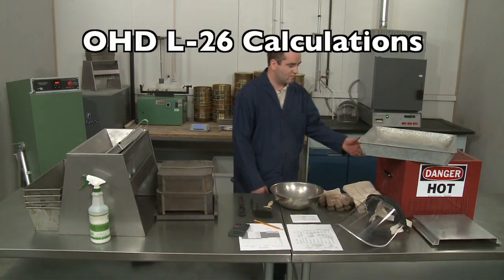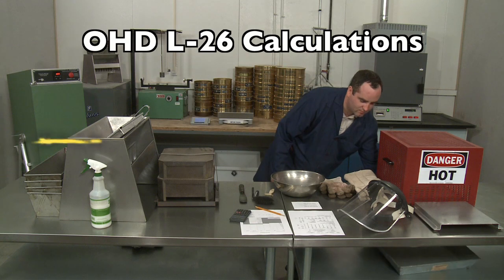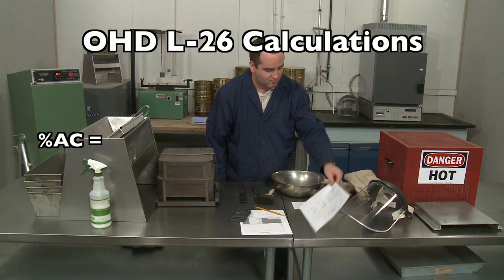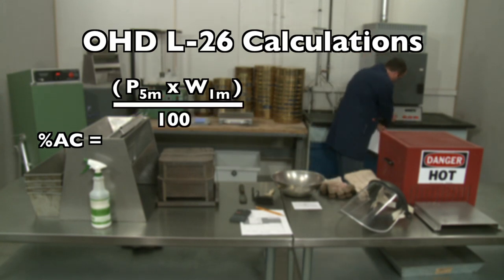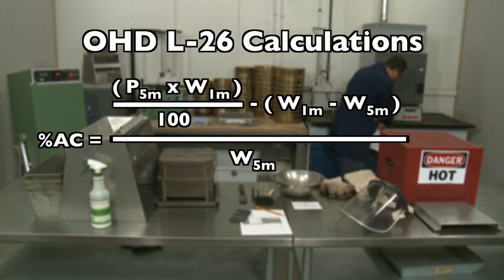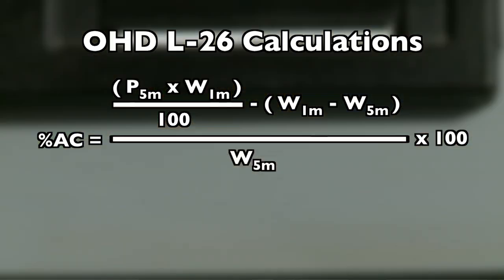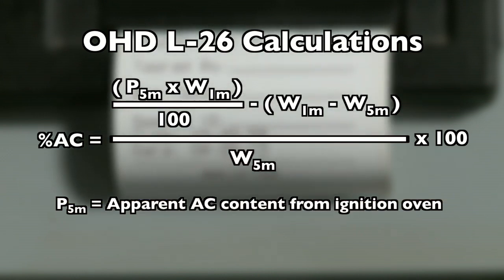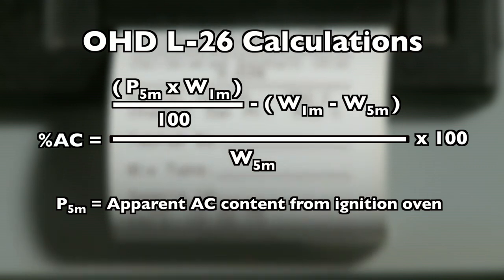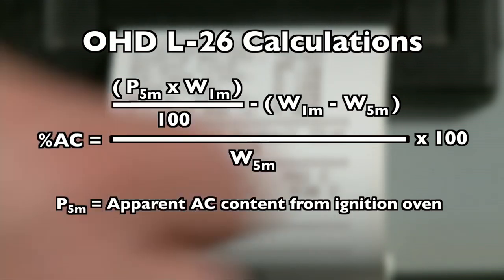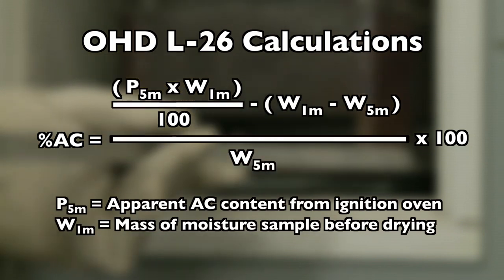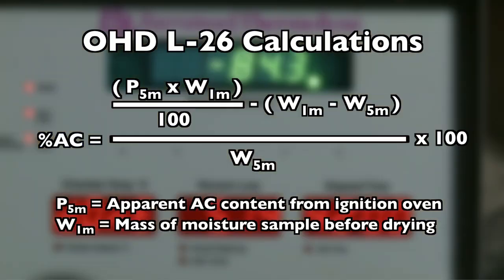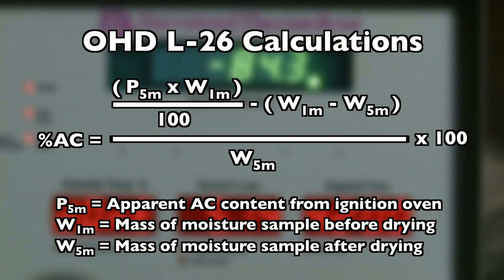Calculate the percent bitumen to the nearest tenth using the following formula: Percent AC equals the quantity P sub-5m times W sub-1m divided by 100, minus the quantity W sub-1m minus W sub-5m, divided by W sub-5m, times 100. P sub-5m is the apparent asphalt content from the ignition oven printout, often listed as the calibrated asphalt content on the NCAT furnace ticket. W sub-1m is the mass of the moisture sample before drying, and W sub-5m is the mass of the moisture sample after drying.